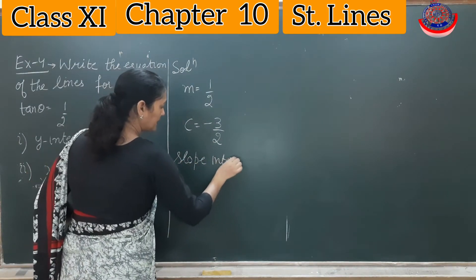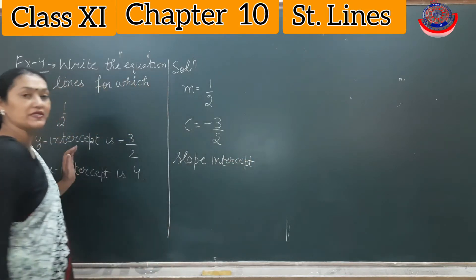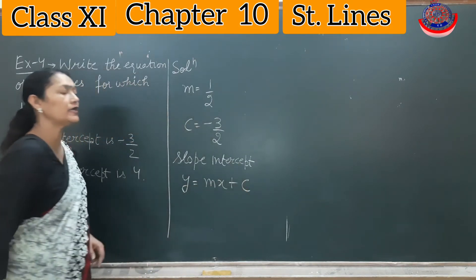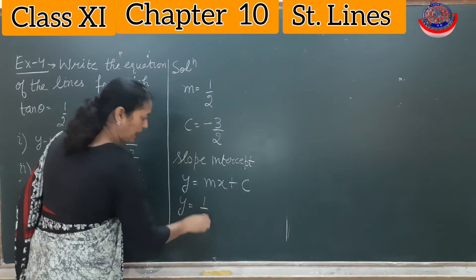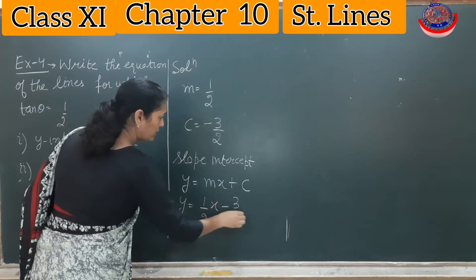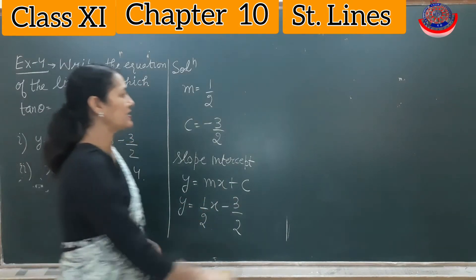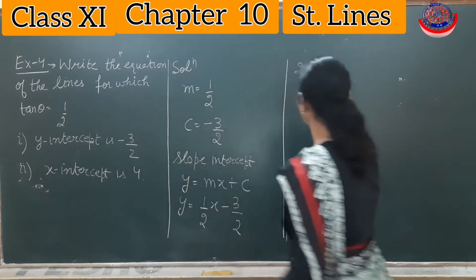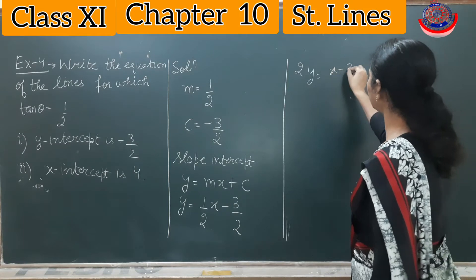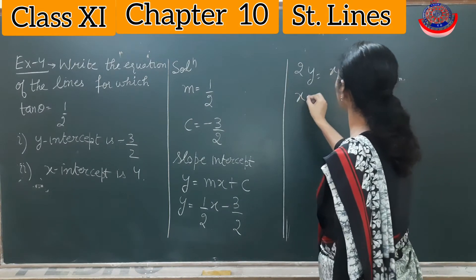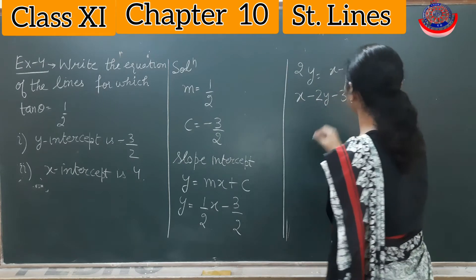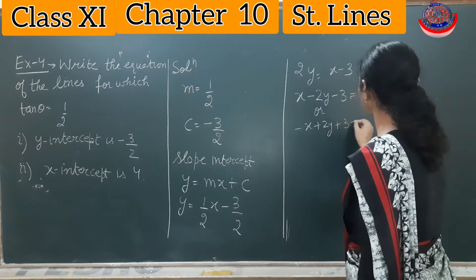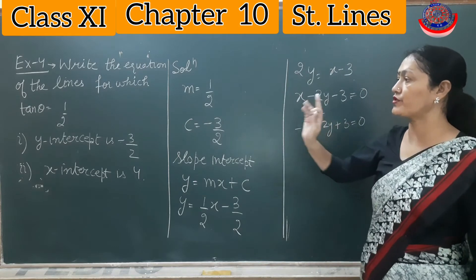Substituting m = 1/2 and c = -3/2 into y = mx + c: y = (1/2)x - 3/2. Taking LCM: 2y = x - 3, so x - 2y - 3 = 0, or equivalently -x + 2y + 3 = 0. This is the equation for the first case.